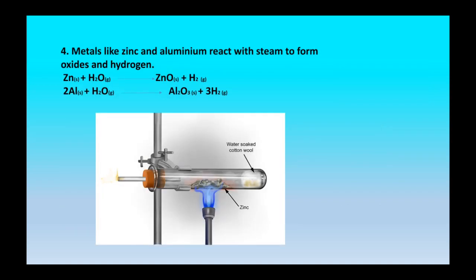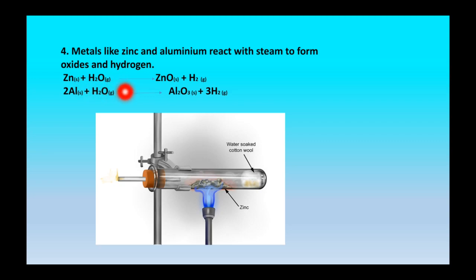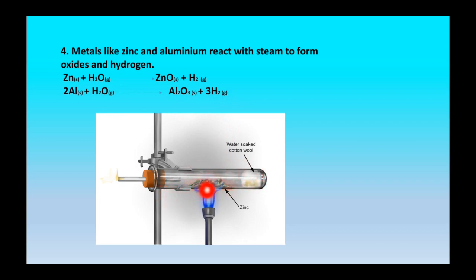When magnesium reacts with hot water it produces magnesium hydroxide and hydrogen gas. Metals like zinc and aluminium react with hot steam and produce their oxides and hydrogen gas. When zinc reacts with steam (water in gaseous state) it produces zinc oxide and hydrogen gas. When aluminium reacts with steam it produces aluminium oxide and hydrogen gas.